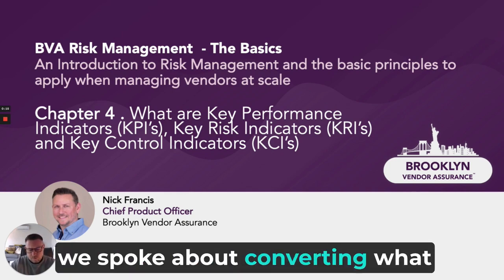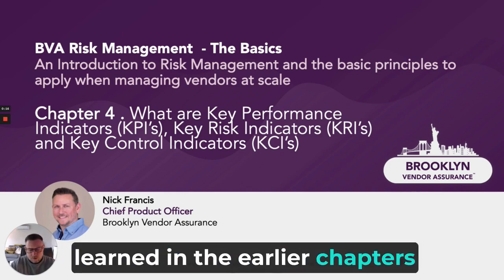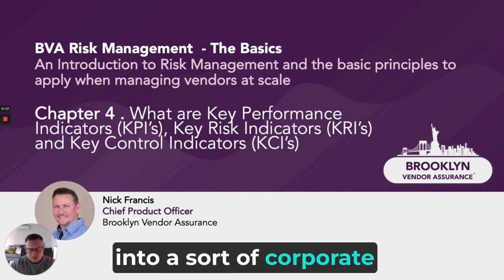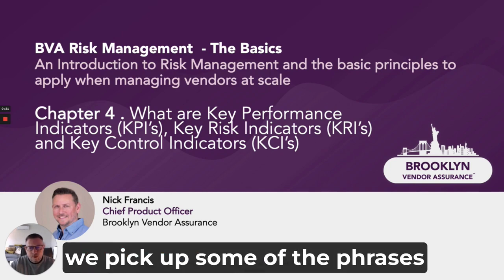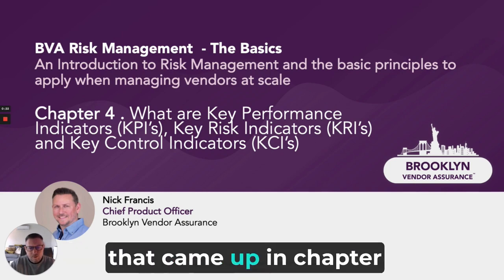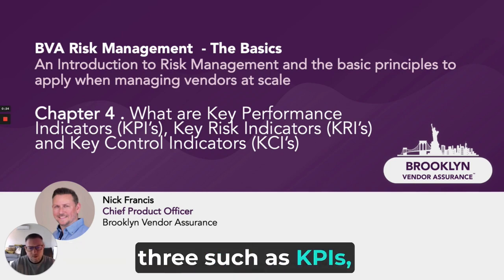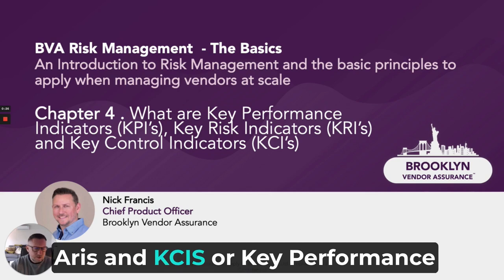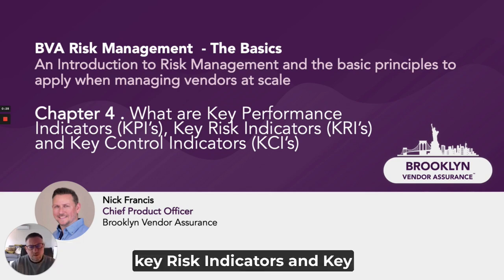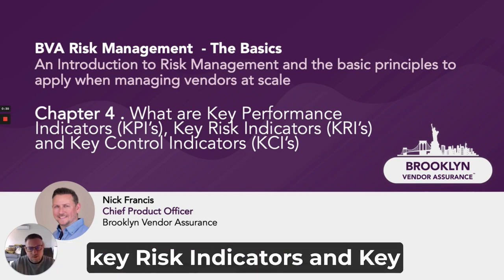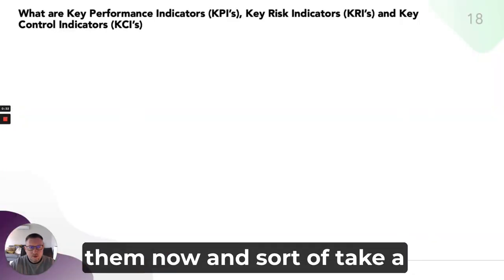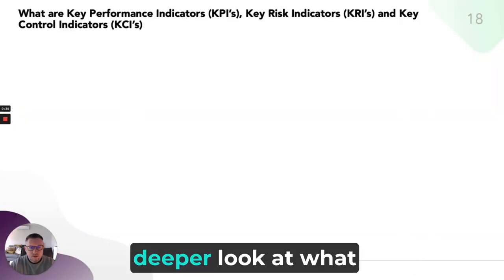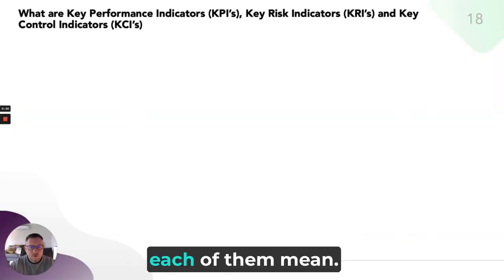In Chapter 3 we spoke about converting what we learned in the earlier chapters into a corporate language and a corporate setting. In Chapter 4 we pick up some of the phrases that came up in Chapter 3, such as KPIs, KRIs and KCIs — Key Performance Indicators, Key Risk Indicators and Key Control Indicators. We're going to go through them now and take a deeper look at what each of them mean.